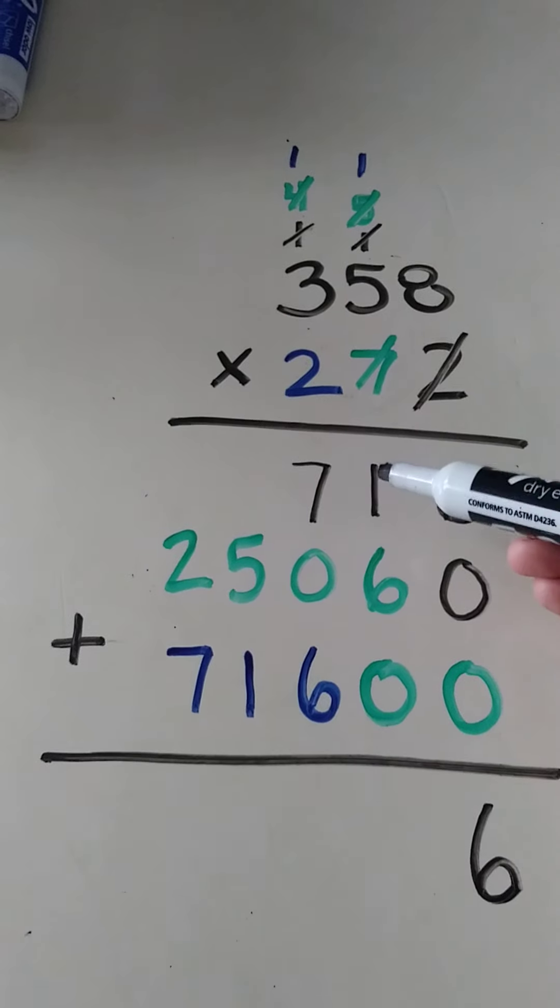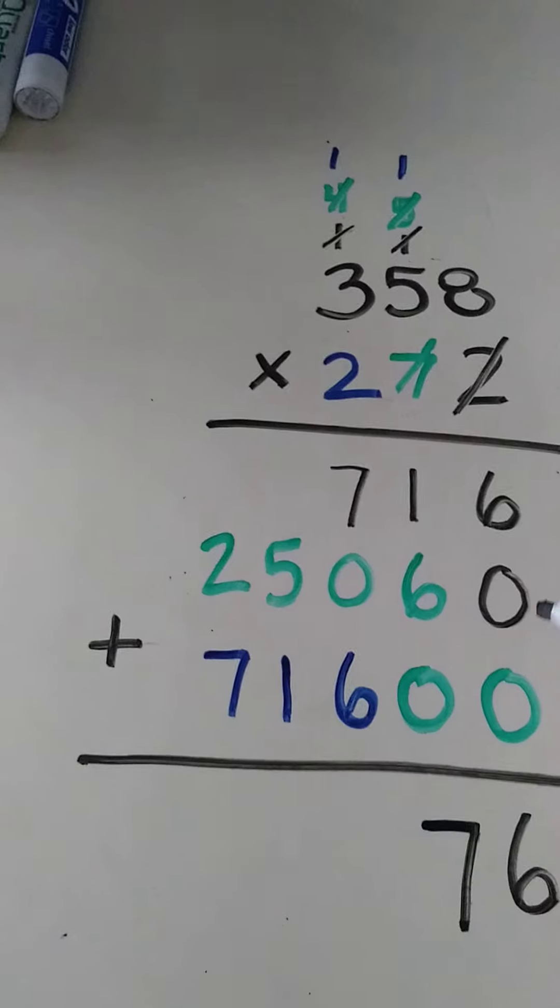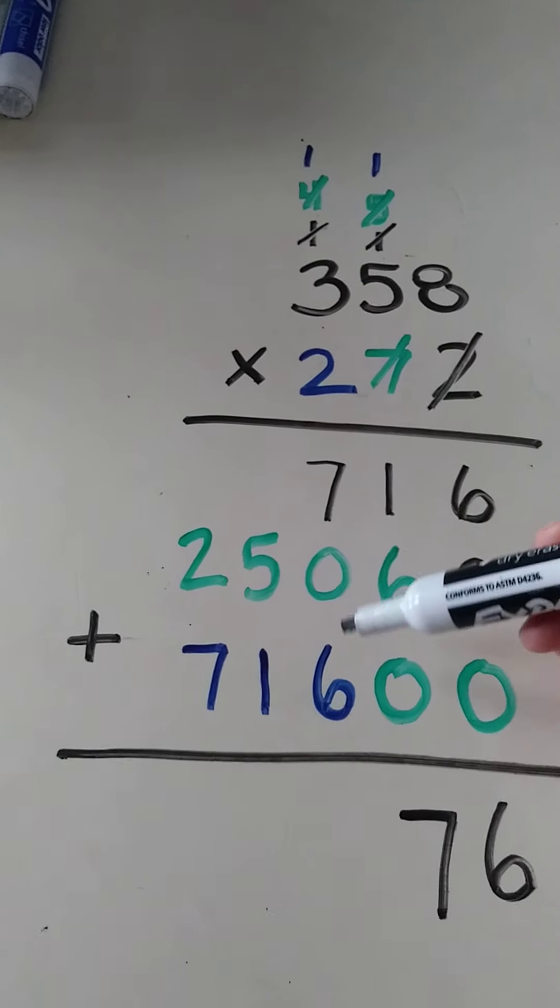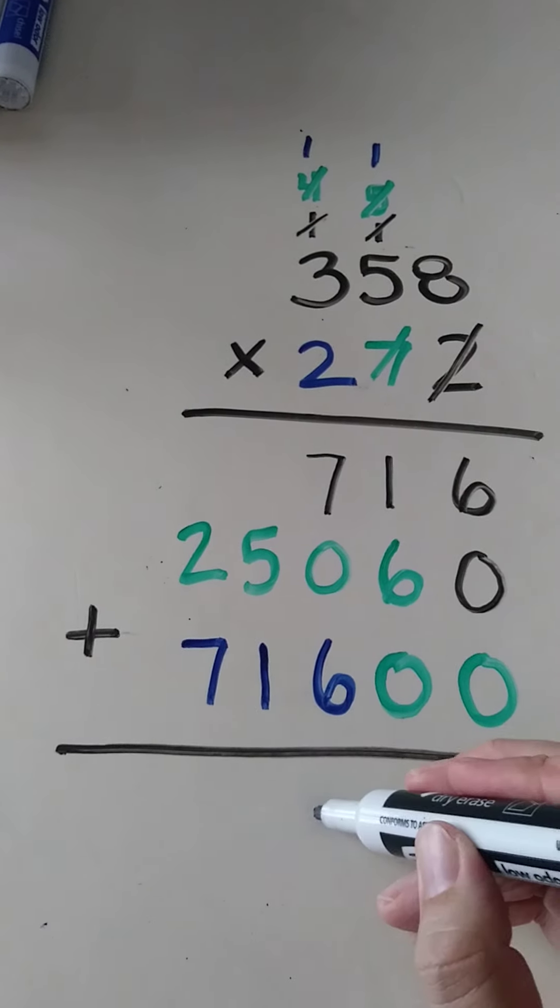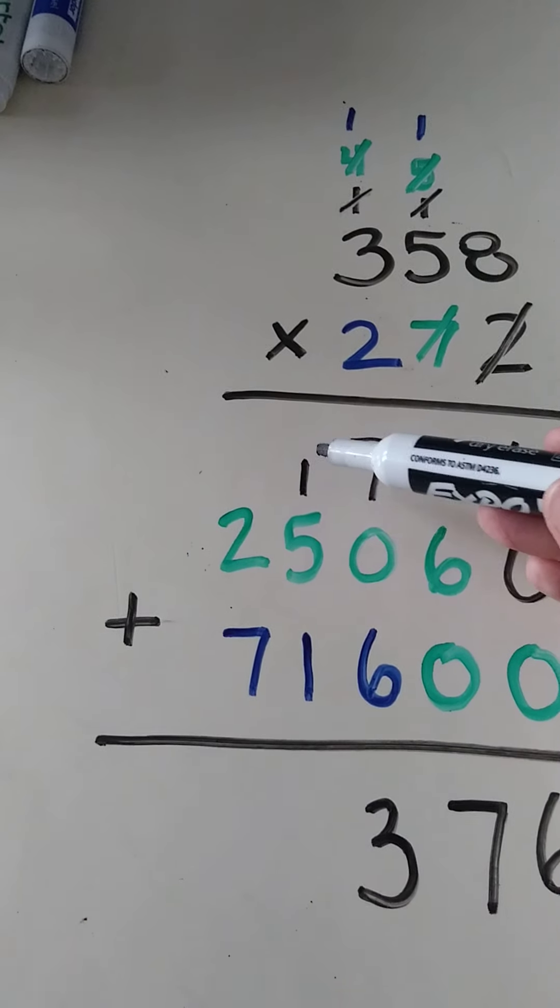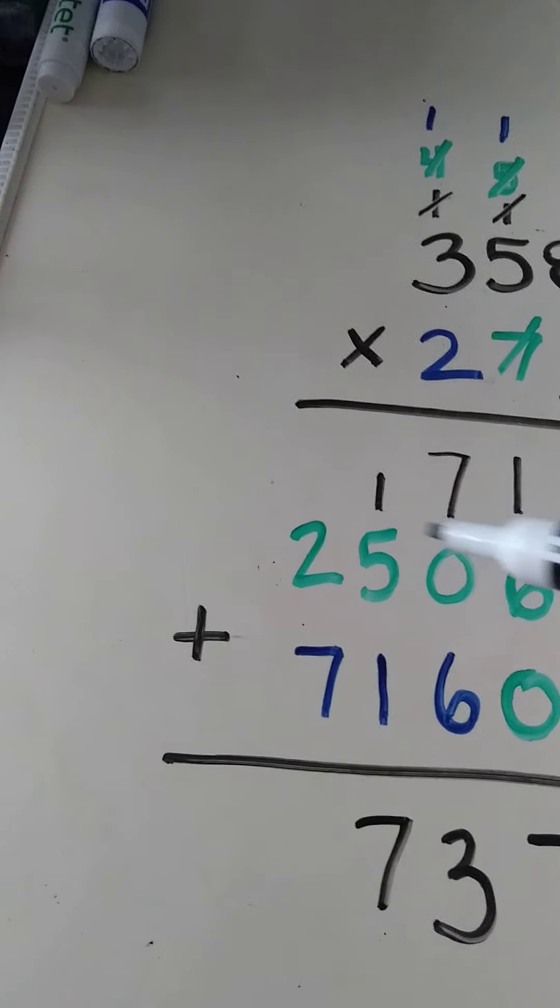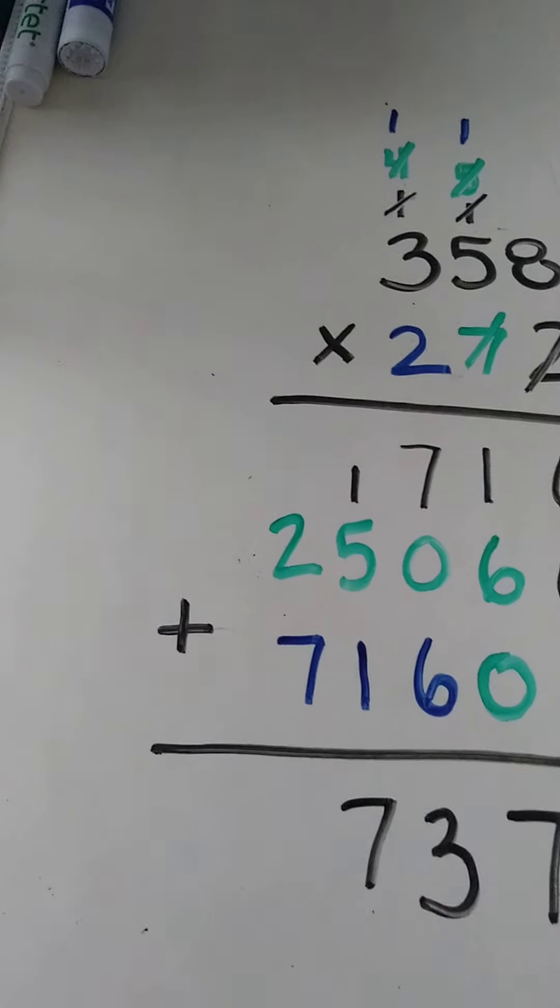So 6 plus 0 plus 0 is 6. 1 plus 6 plus 0 is 7. 7 plus 0 plus 6 is 13. 5 plus 1 plus 1 is 7. And then 2 plus 7 is 9.